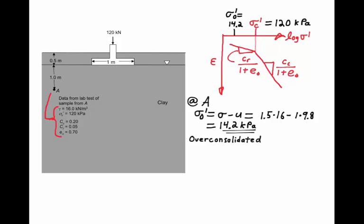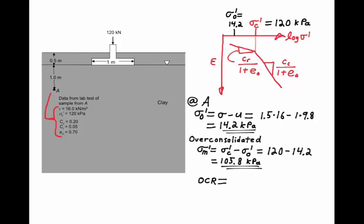The next question is: how over-consolidated is it? There are two ways to measure over-consolidation. One is the over-consolidation margin, which is just the difference between the pre-consolidation stress and existing vertical stress. In this case, that's 120 minus 14.2, or 105.8 kilopascals. The other way is the over-consolidation ratio, which is simply the ratio of the pre-consolidation stress to the existing vertical stress. In this case, our over-consolidation ratio would be 8.5. In this problem, we'll use the over-consolidation margin of 105.8 kPa.